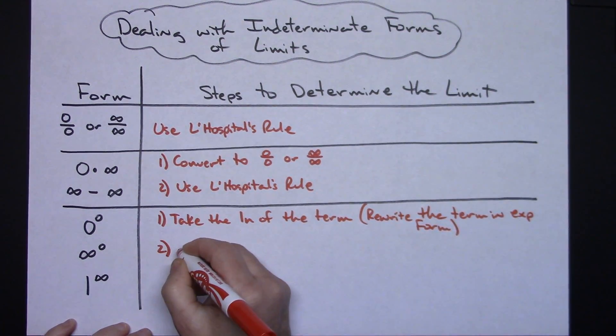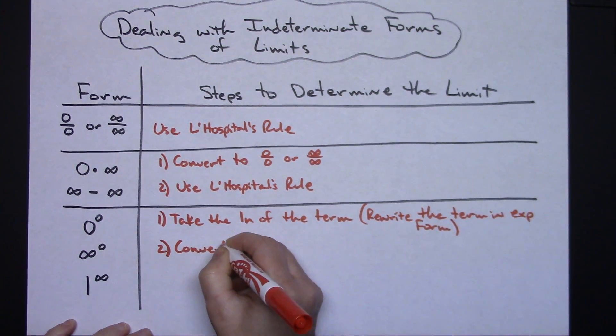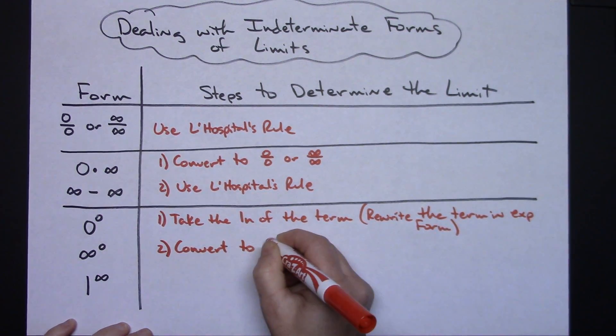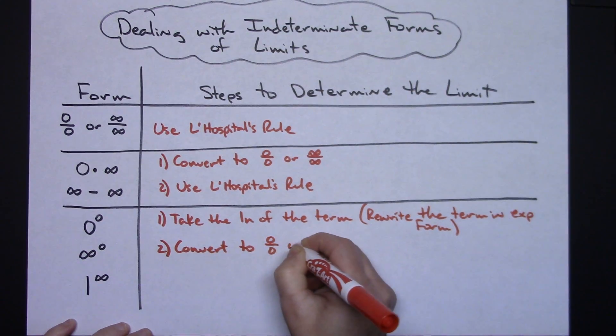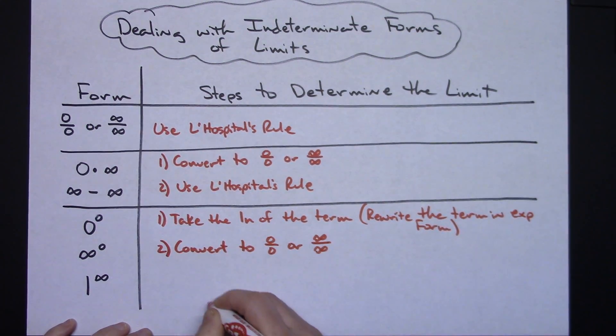Then you're going to convert again to either zero over zero or infinity over infinity, and then step three, use L'Hopital's rule.